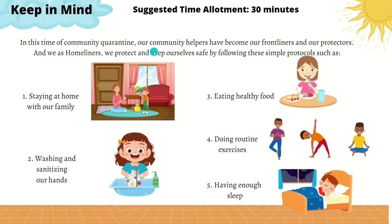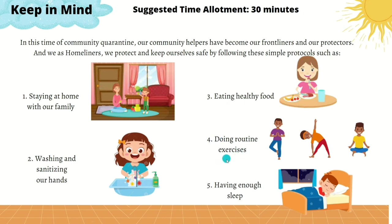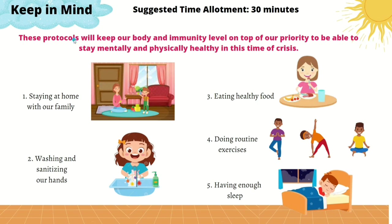At this time of community quarantine, our community helpers have become our frontliners and protectors, and we are called home liners. What do we need to do to become home liners? We protect and keep ourselves safe by following simple protocols such as: staying at home with our family, washing and sanitizing our hands, eating healthy food, doing routine exercise at home, and sleeping enough so that our body and immune system are energized. These protocols will keep our body and immunity level on top of our priority to stay mentally and physically healthy in this time of crisis.